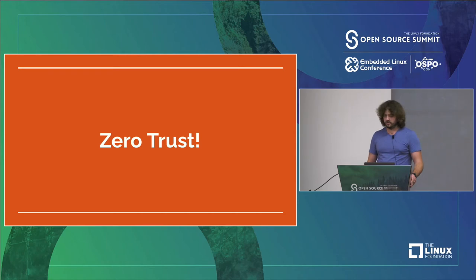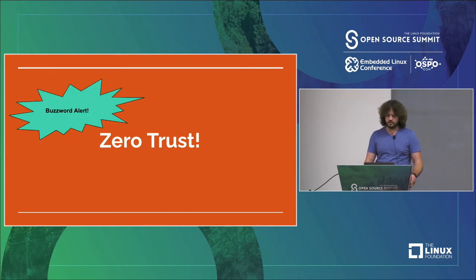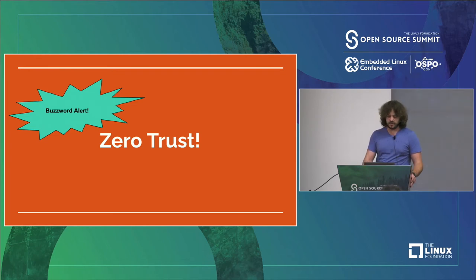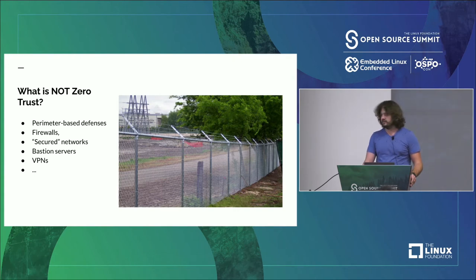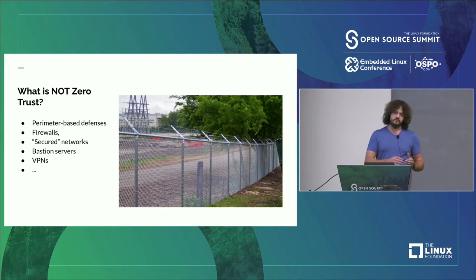We'll start with the first buzzword: zero trust. There's not a great definition I like. It's become something where if you walk around the RSA floor there are hundreds of vendors trying to sell it. I have to think about what zero trust is NOT and work backwards. The big theme is perimeter-based defenses — that is NOT zero trust. If you're relying on a firewall or some allowlist of repositories, assuming everything inside that boundary is safe, that is the opposite of zero trust.